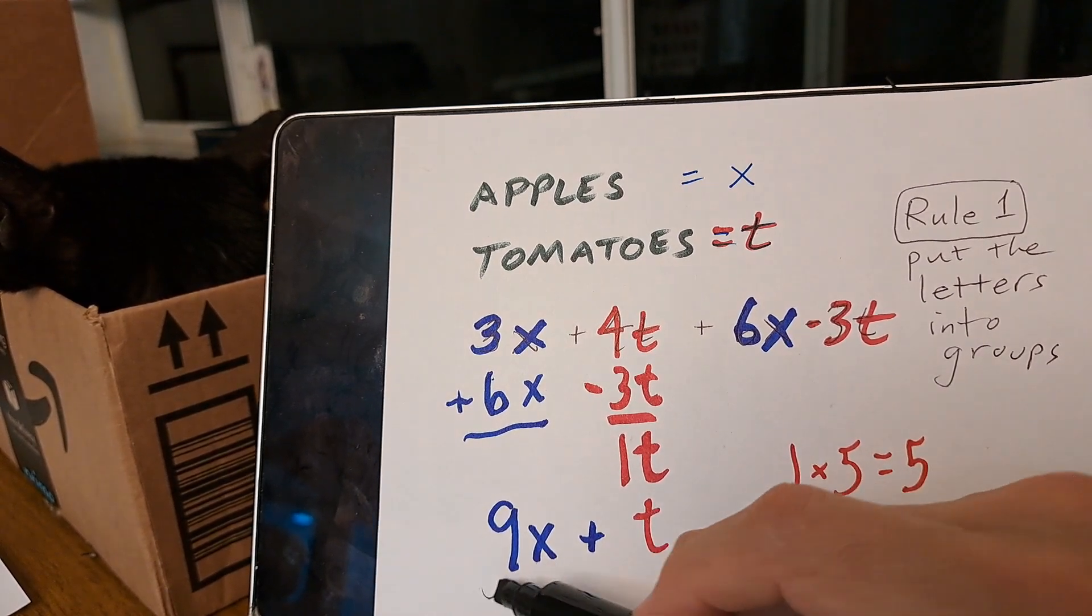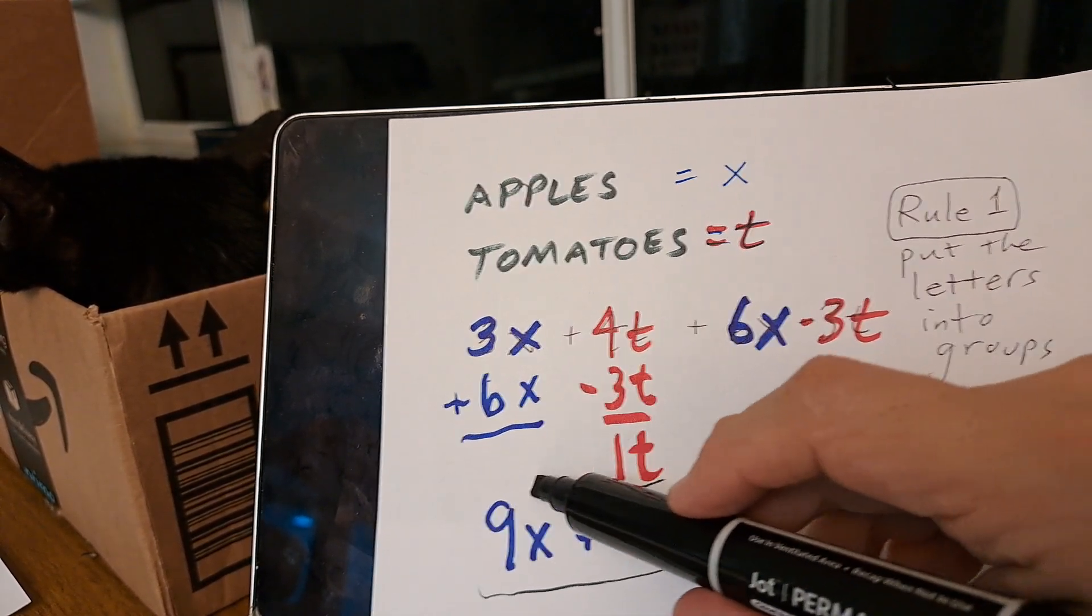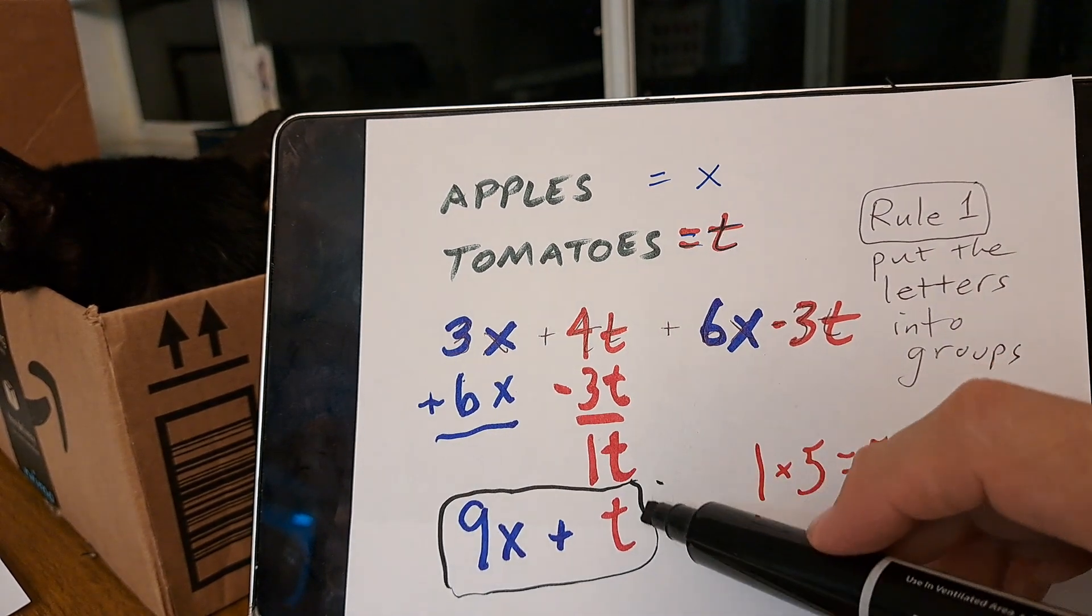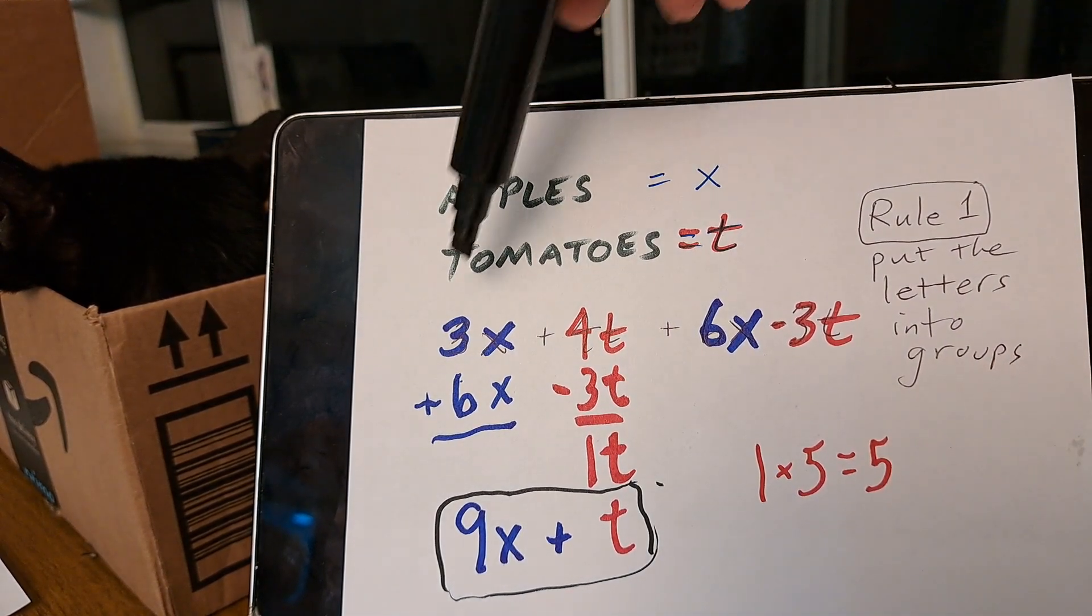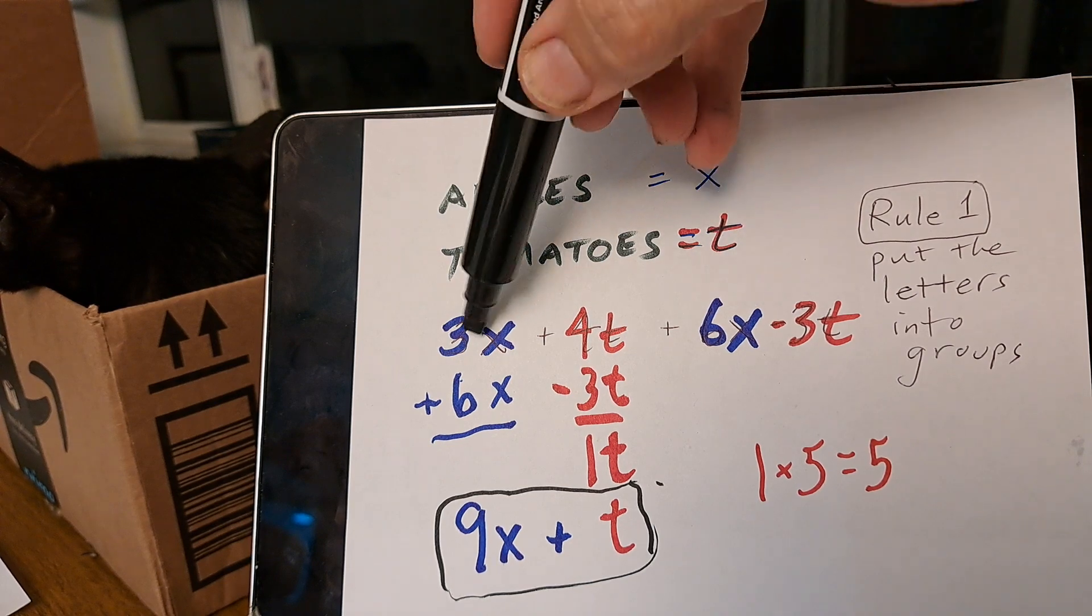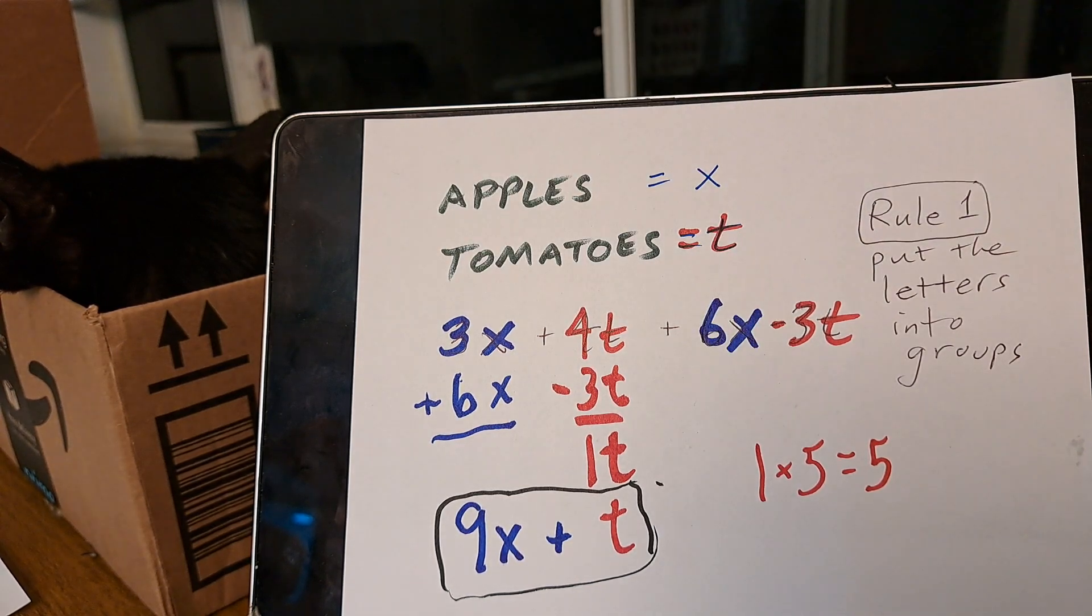And this right here would be the final answer. That's what we're looking for. So when you see a group like this, you want to pull the X's and the Ts together.